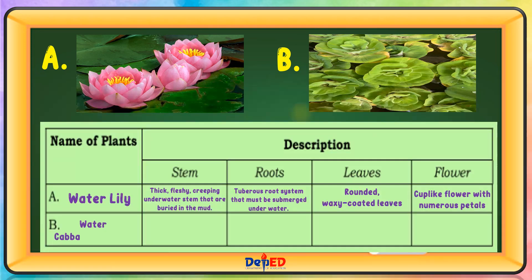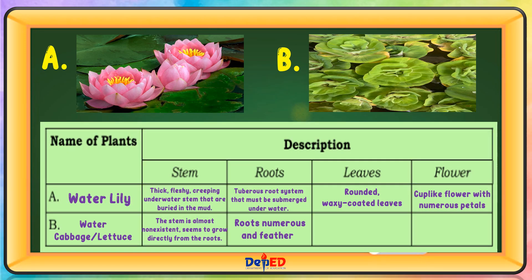Water cabbage or water lettuce. Stem: the stem is almost non-existent, seems to grow directly from the roots. Roots: numerous and feathery. Leaves: often spongy near the base. Flower: flowers are not clearly visible, clustered on small, fleshy stalks.